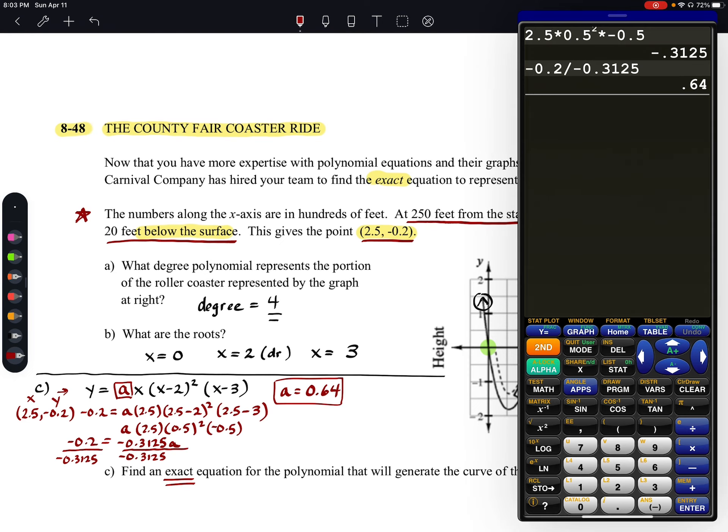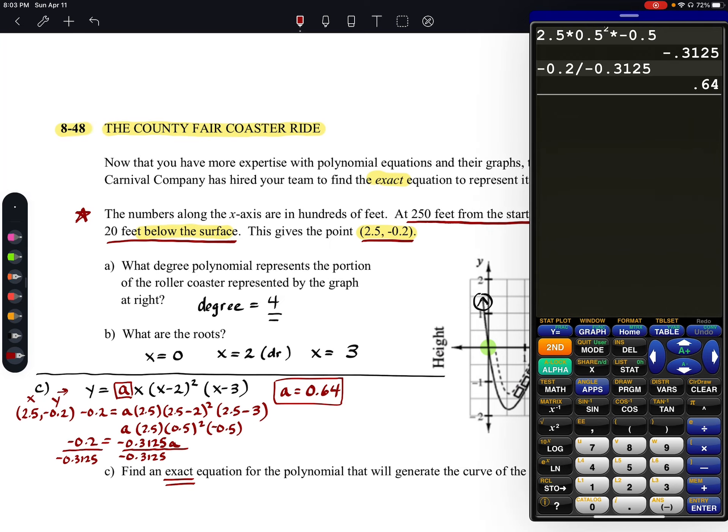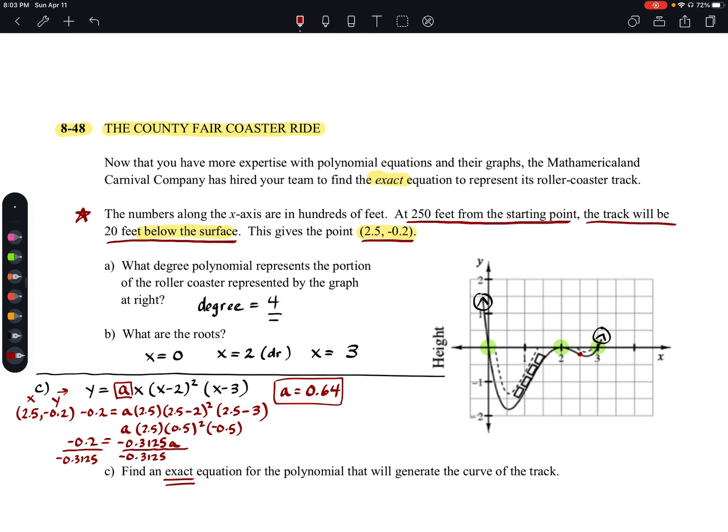So what's the exact equation? Our exact equation should be y equals 0.64 times x times the quantity of (x - 2) squared times the quantity of (x - 3). That should generate the curve of our track.